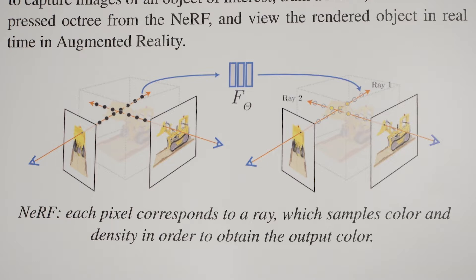Whenever you want to render this scene or object from a different view, you do ray tracing using this network to calculate the colors and densities as you go through.